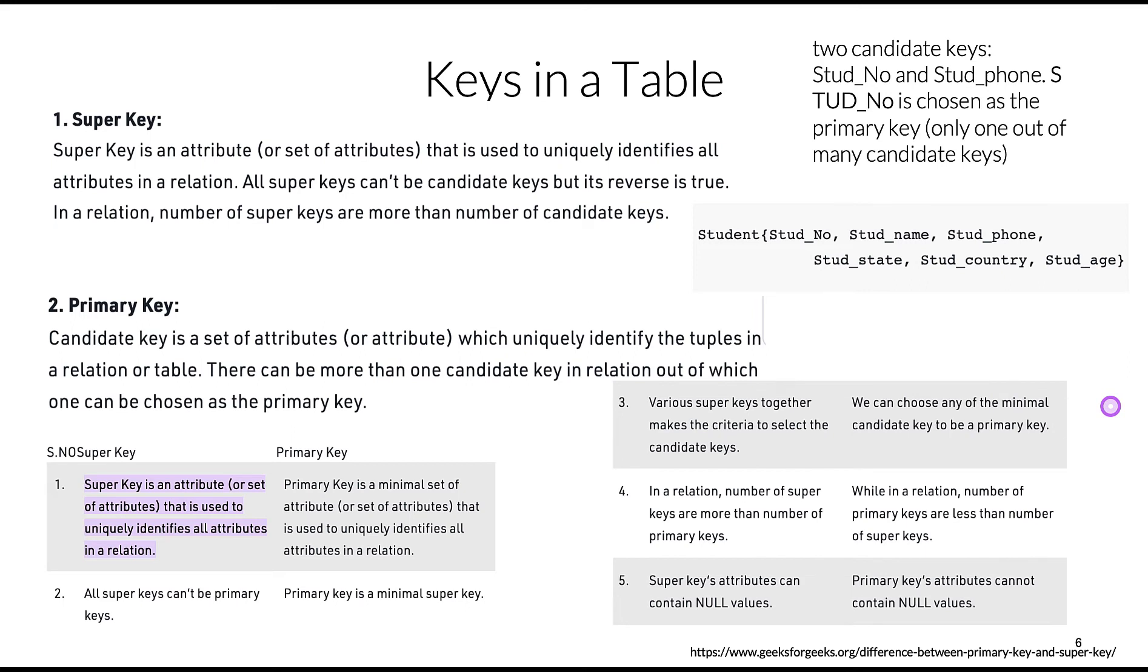The notion of keys is extremely important in designing our database. We can have super keys - attributes that are used to uniquely identify all attributes in a relation. All super keys cannot be candidate keys. We have primary keys, which is a candidate key that uniquely identifies the tuples in a relational table.